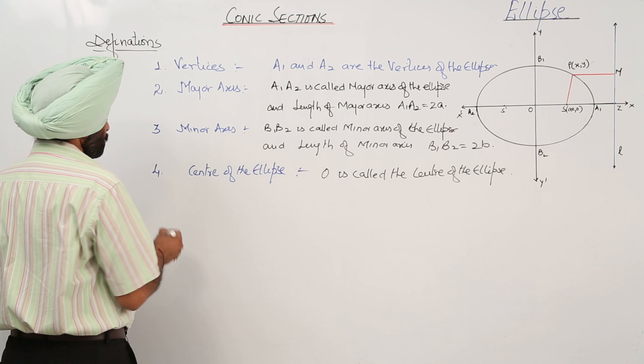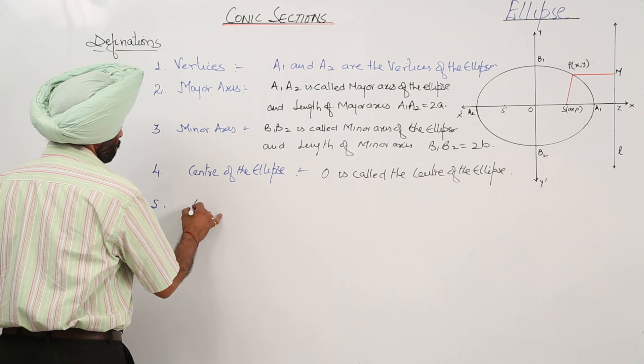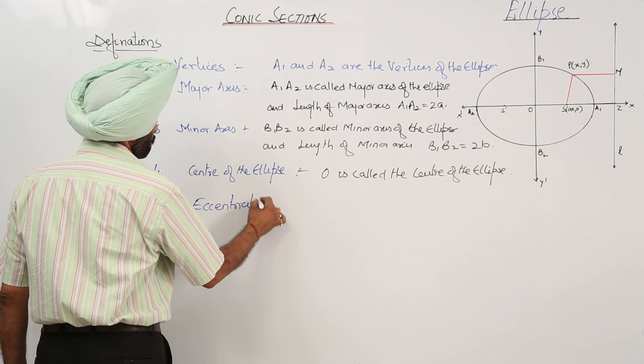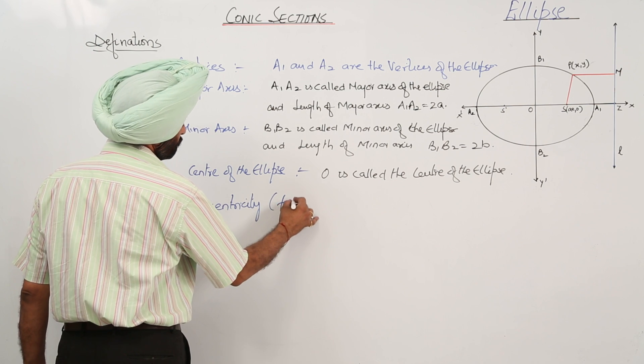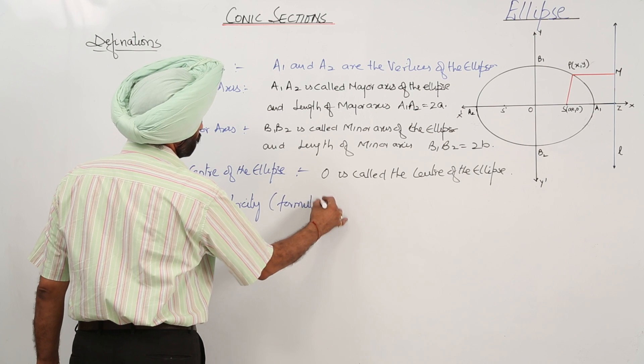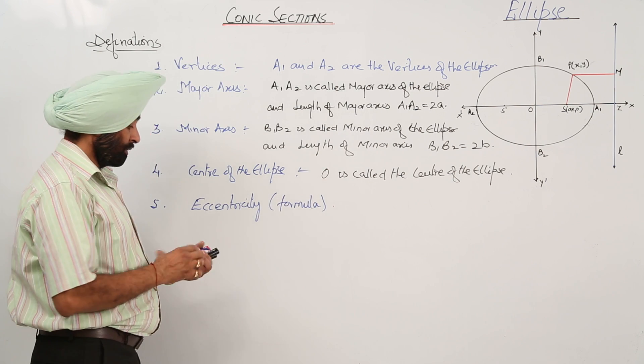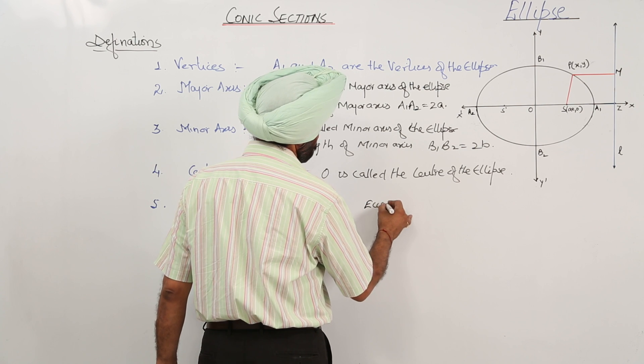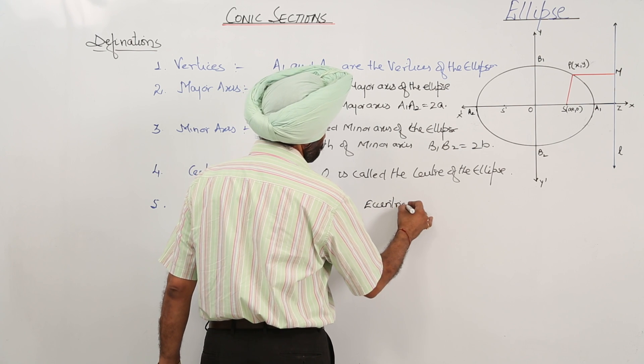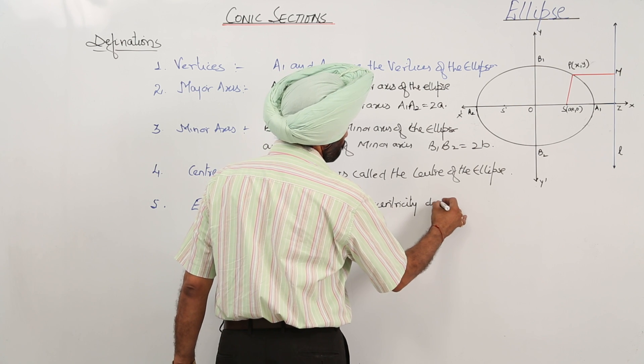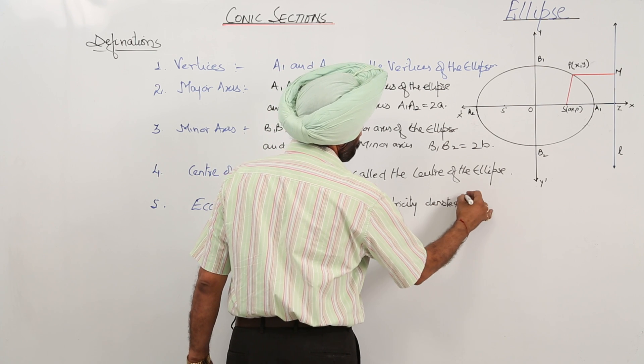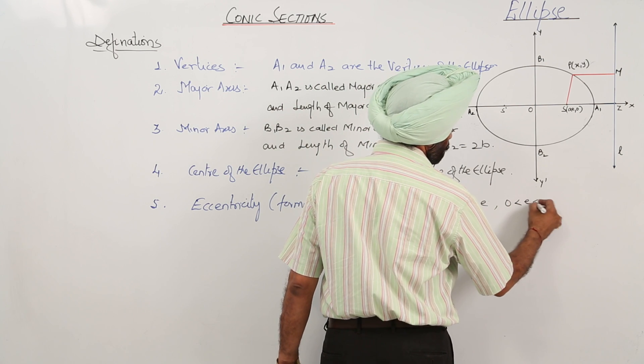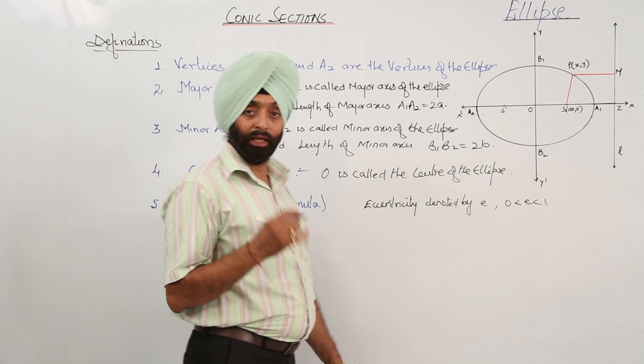And fifth one is eccentricity formula. We are knowing eccentricity denoted by E, where 0 is less than E is less than 1 for the ellipse case.